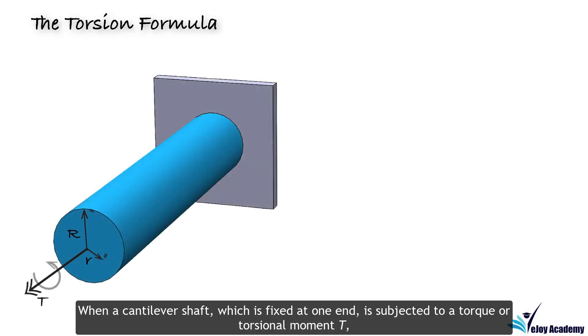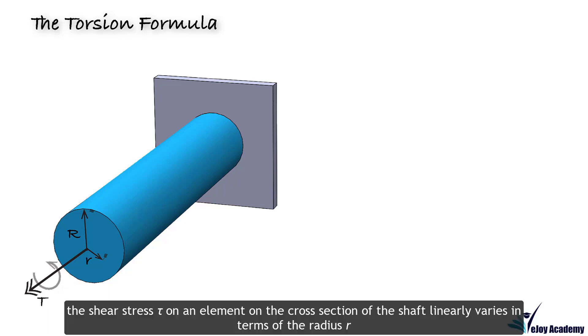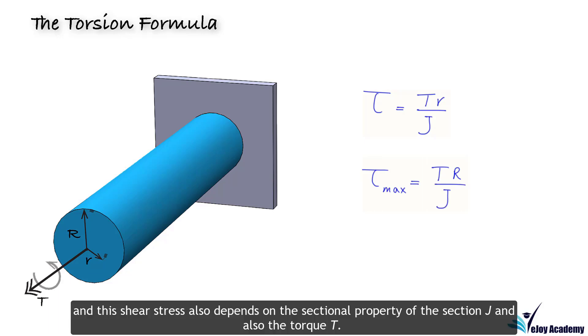When a cantilever shaft, which is fixed at one end, is subjected to a torque or torsional moment T, the shear stress tau on an element on the cross section of the shaft linearly varies in terms of the radius r. And this shear stress also depends on the sectional property of the section J and also the torque T.